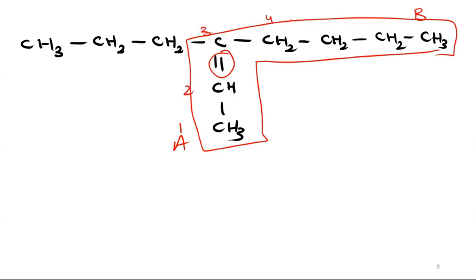1, 2, 3, 4, 5, 6, 7. So what's the name? 3-propyl-hept-2-ene.